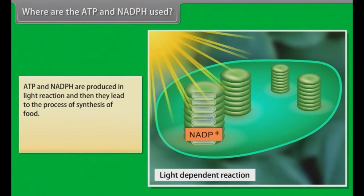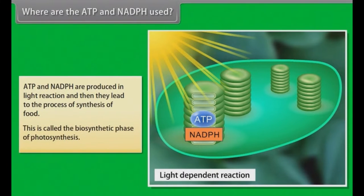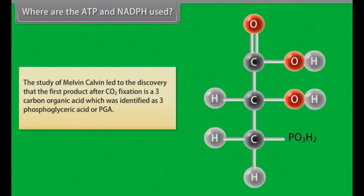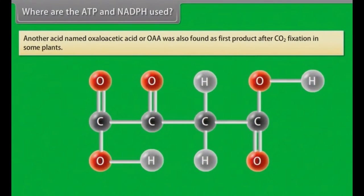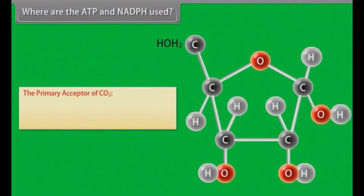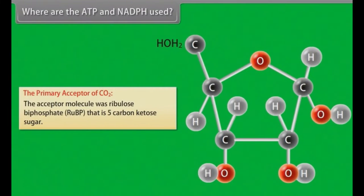Where are the ATP and NADPH used? ATP and NADPH are produced in light reaction and then they lead to the process of synthesis of food. This is called the biosynthetic phase of photosynthesis. The study of Melvin Calvin led to the discovery that the first product after carbon dioxide fixation is a 3-carbon organic acid which was identified as 3-phosphoglyceric acid or PGA. Another acid named oxaloacetic acid or OAA was also found as first product after carbon dioxide fixation in some plants. The primary acceptor of CO2 was ribulose bisphosphate, RUBP, that is 5-carbon keto sugar.